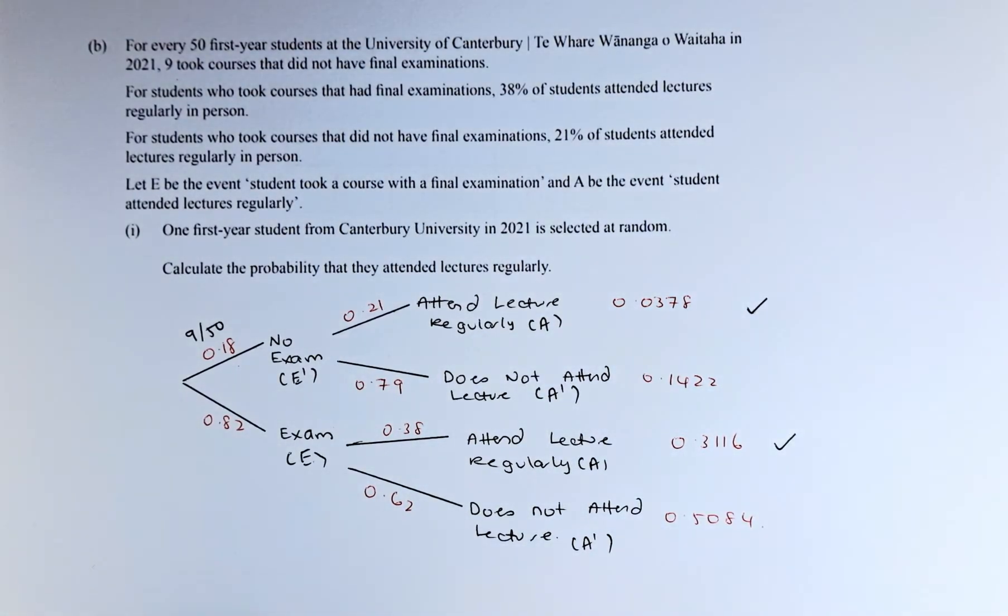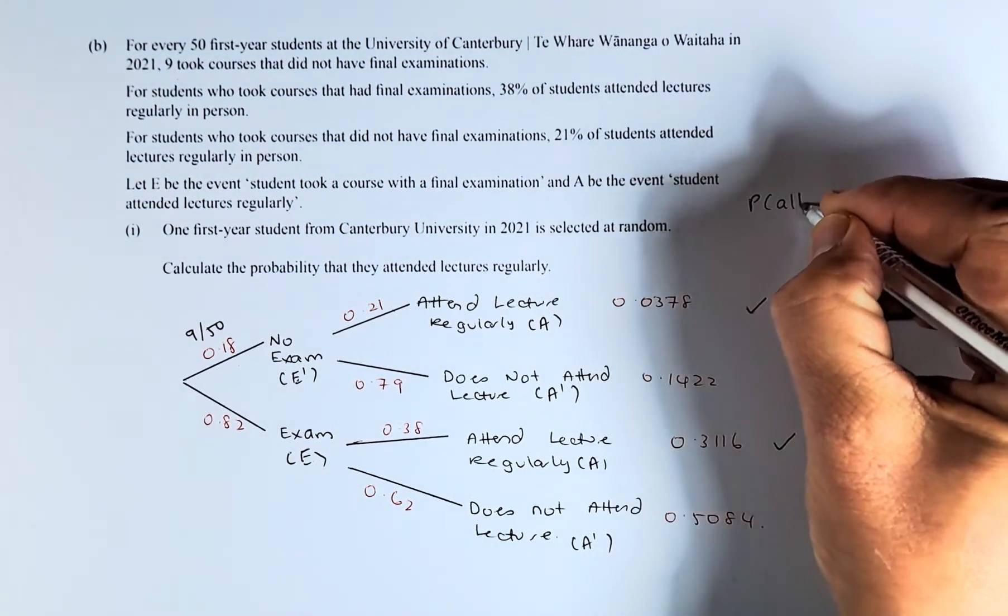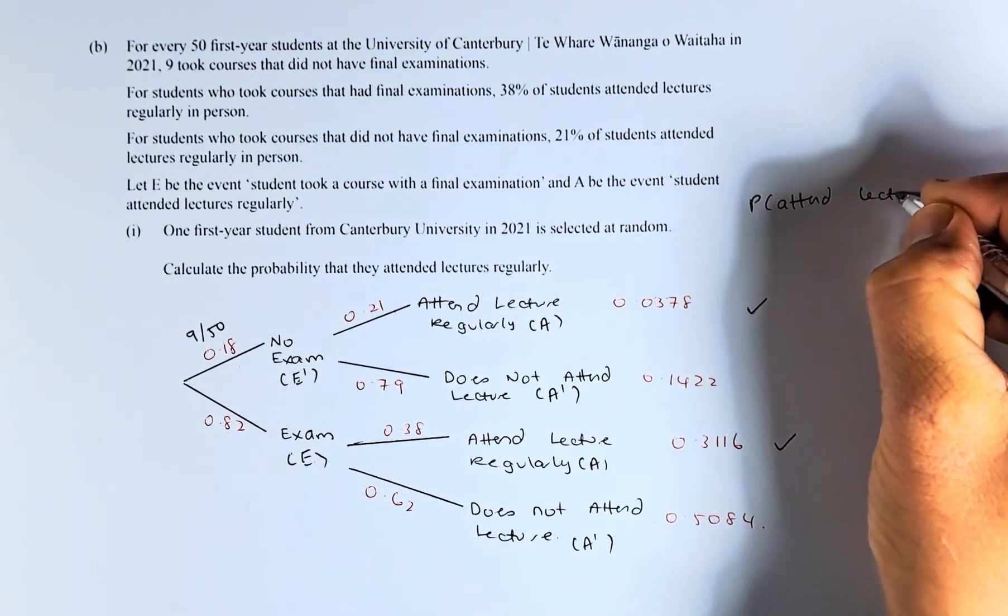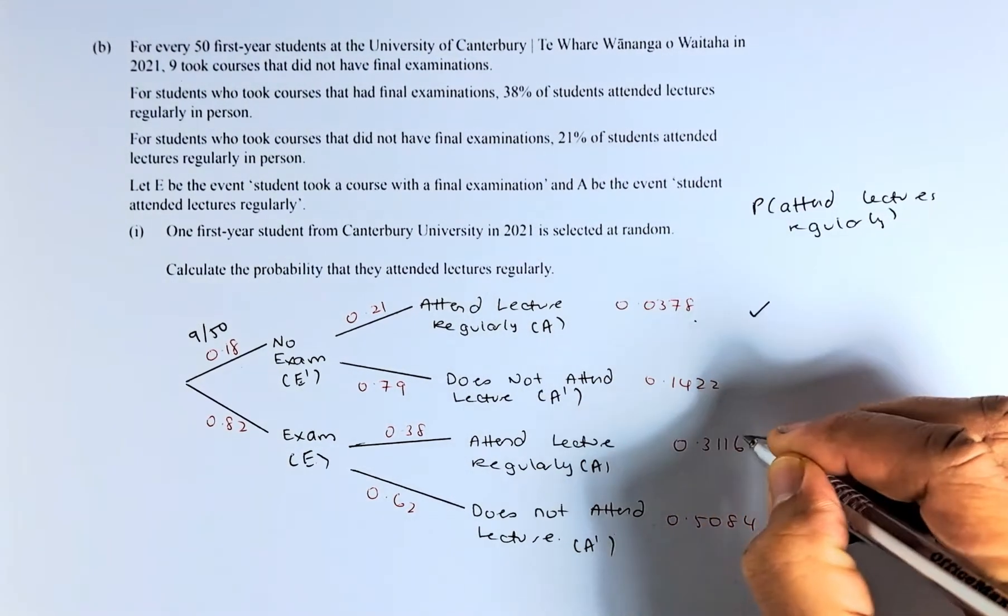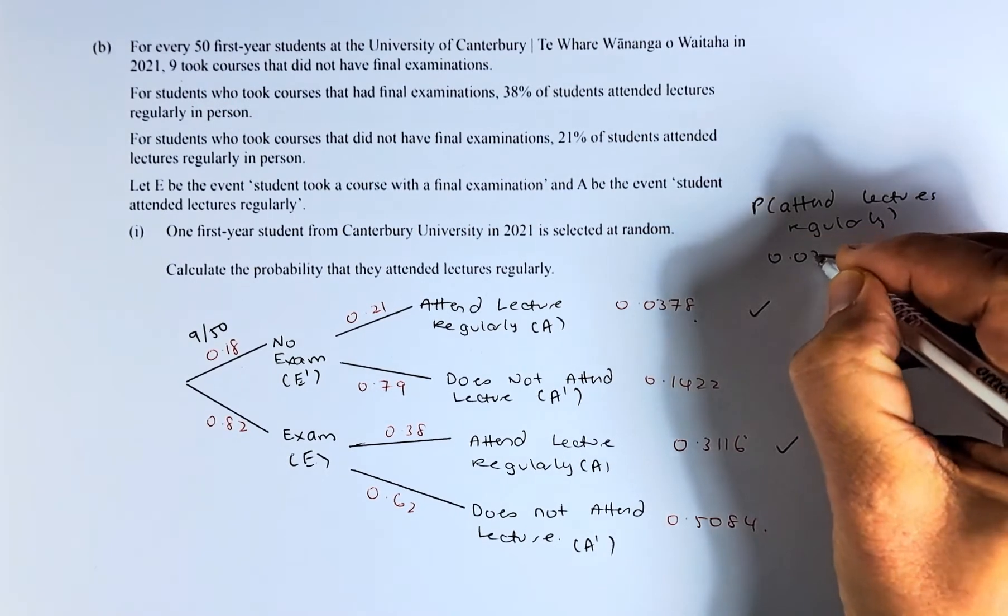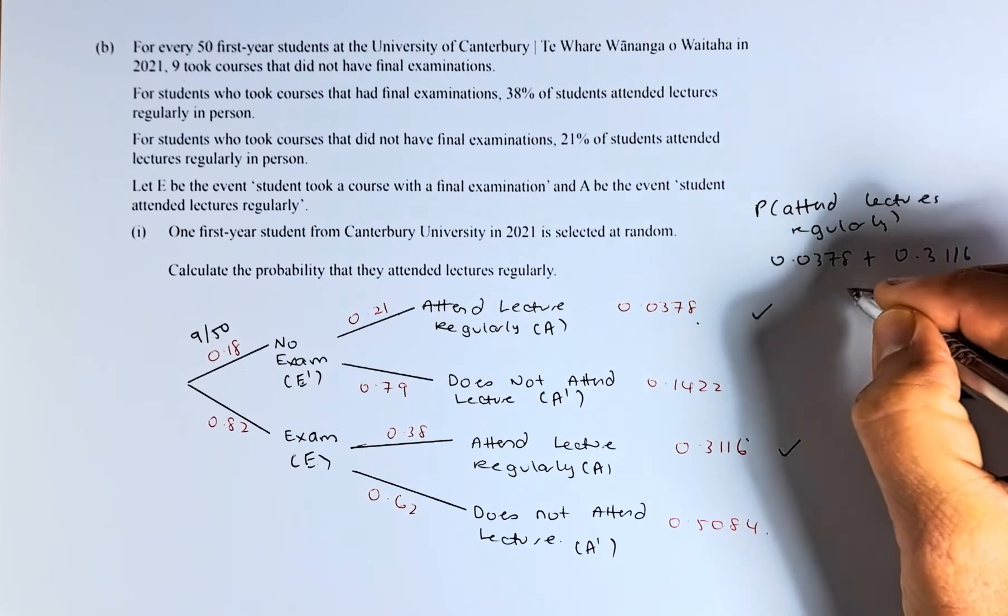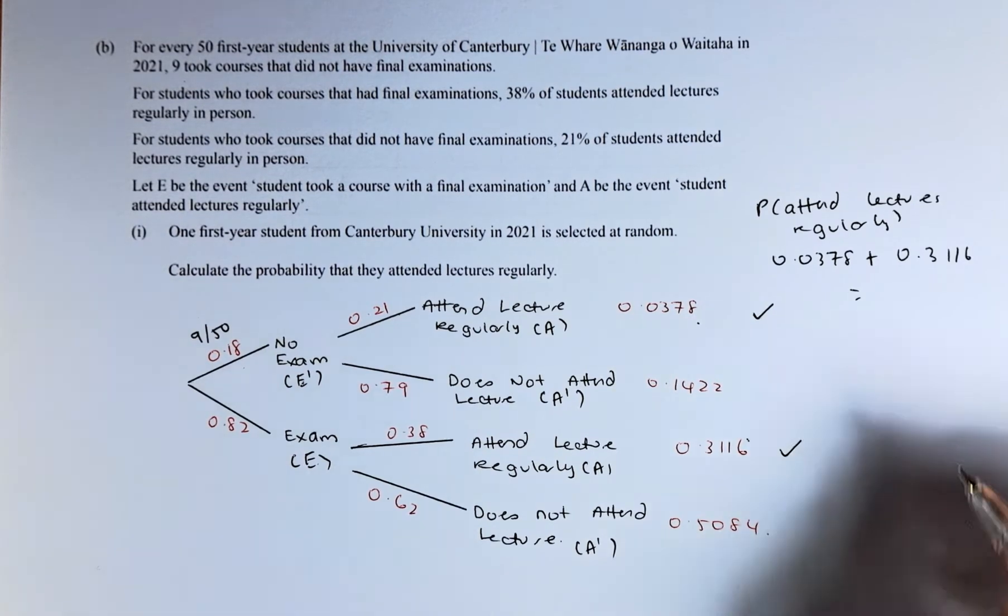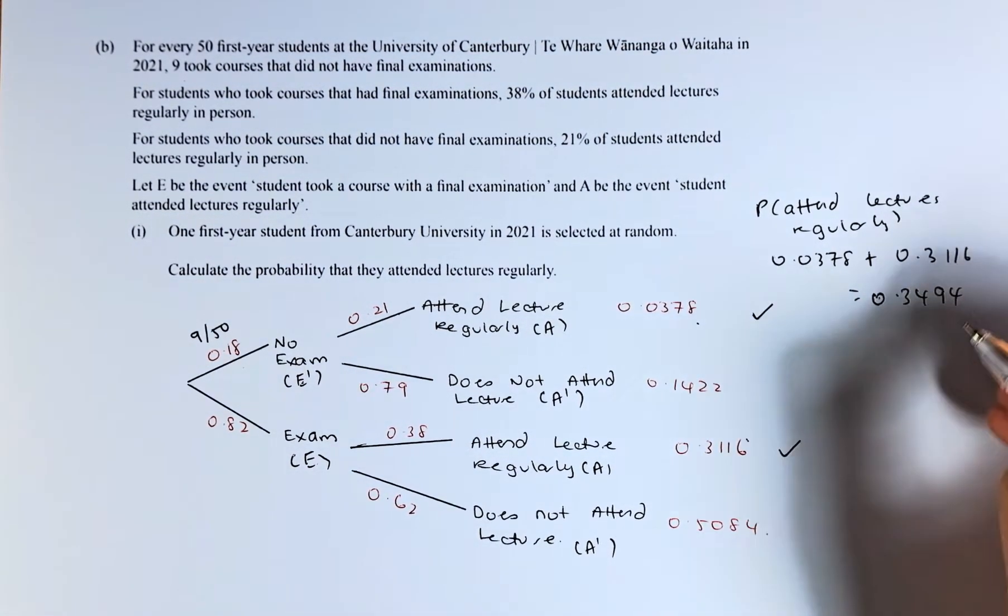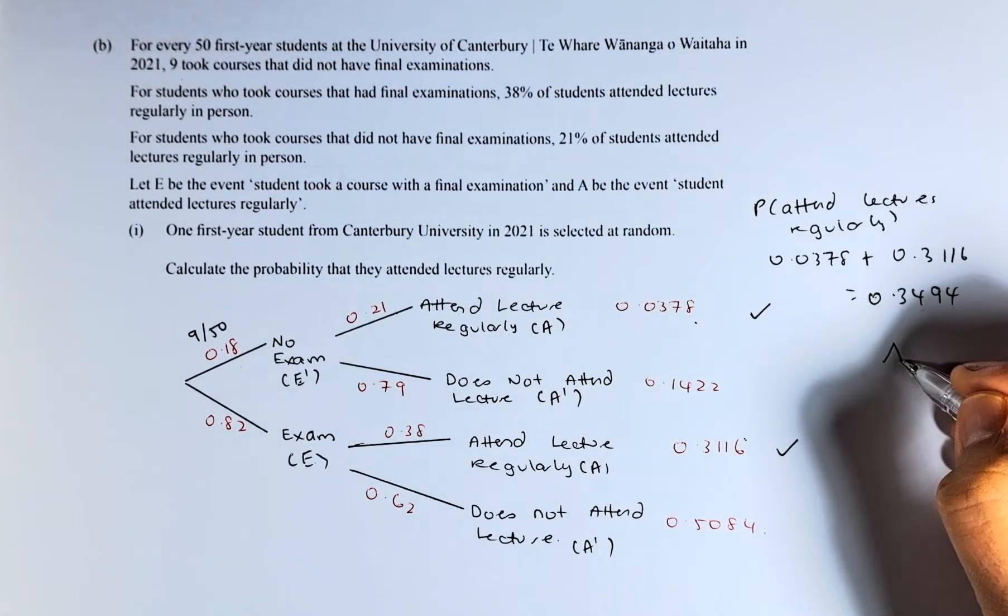The probability they attend lectures regularly is just going to be these two numbers adding up together: 0.0378 and you're going to add up with 0.3116. Put in your calculator and the answer is going to be 0.3494. If you can answer that, that will be a simple achieve in this paper.